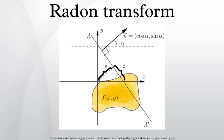It follows that the quantities can be considered as coordinates on the space of all lines in R², and the Radon transform can be expressed in these coordinates.